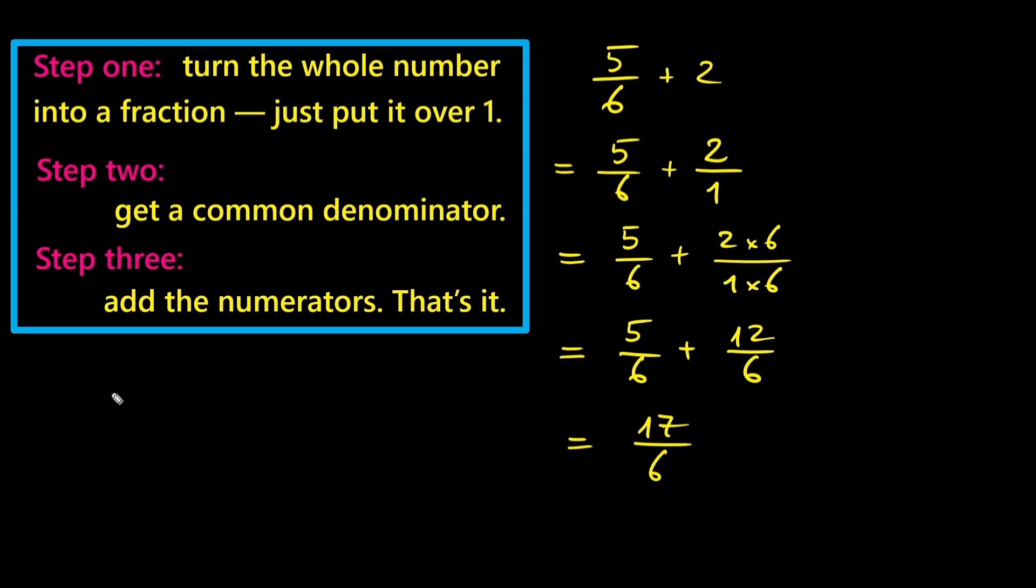Now here's one for you. Try this. What's three plus four-fifths? Just follow the same steps. Turn three into a fraction, get common denominators, and add. Take your time.